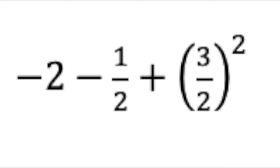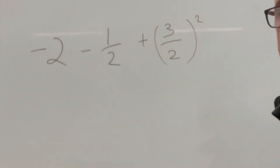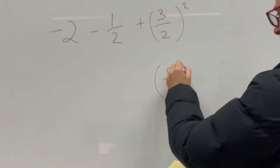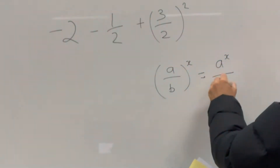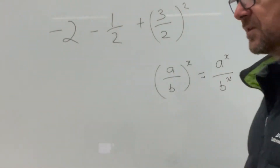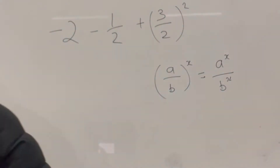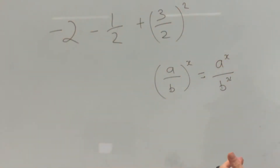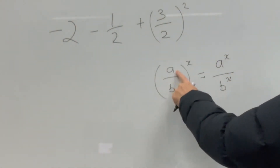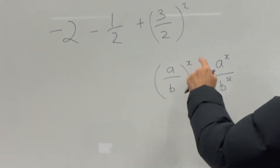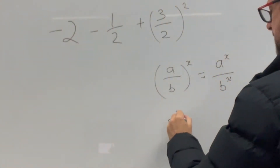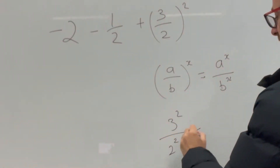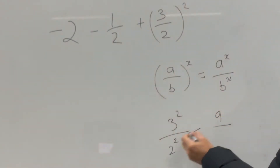Here we have a common denominator question: 5y over 12 take away 3y over 10. We can only do subtraction of fractions if we have common denominators. So the rule here is (a/b)^x = a^x / b^x — always make sure you use the formula sheet for these types of questions. The a in this one is 3, so it becomes 3 squared over 2 squared, which is 9 over 4.